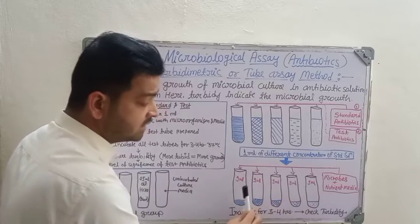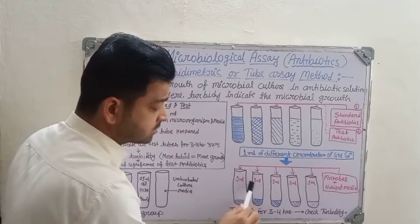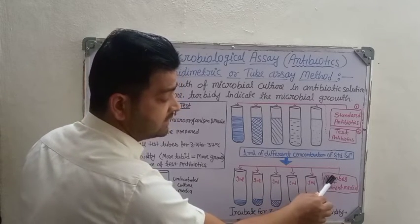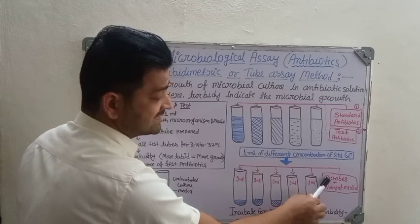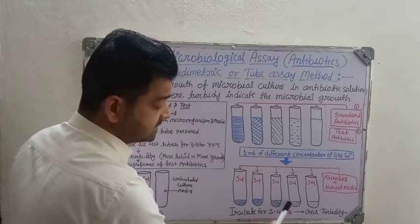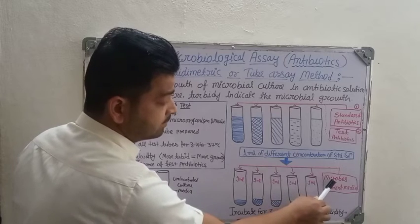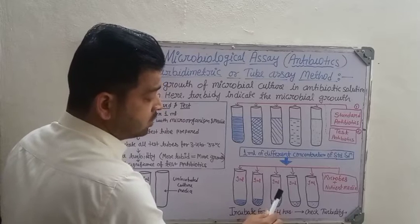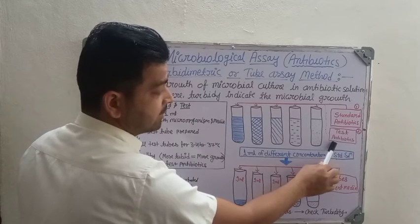We prepare five different concentrations of standard antibiotic solution, and then transfer 1 ml from each concentration into five separate new test tubes. The remaining 9 ml in each of those new tubes is filled with nutrient media and the microorganisms being used for antibiotic testing. So each tube contains a total of 10 ml.